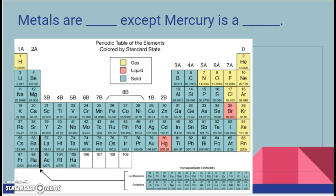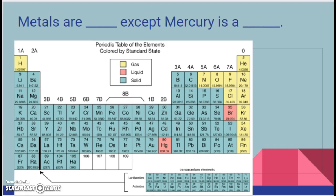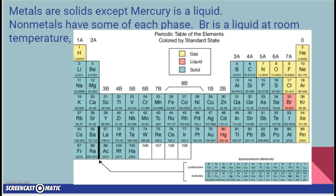Metals are solid, except mercury is a liquid. So talking about states of matter — solid, liquid, and gas — metals are solid, except for mercury, which is a liquid. Just a reminder that mercury is toxic. Non-metals have some of each phase. Bromine is a liquid at room temperature. So bromine and mercury are the only two elements that are liquid at room temperature.